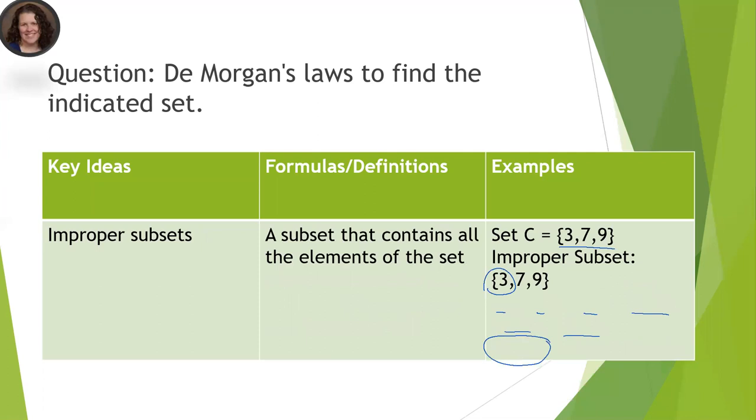All right, so now let's talk about improper subsets. So an improper subset is when your subset is the set. So when here's our set, 3, 7, and 9, the improper subset is when you have everything.